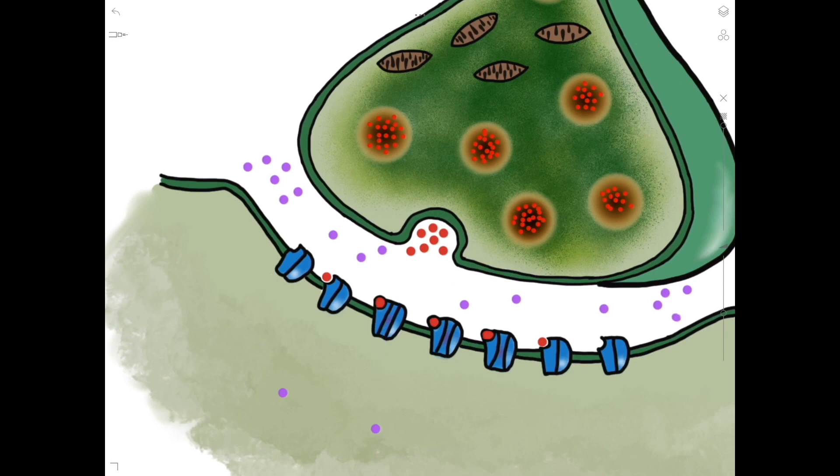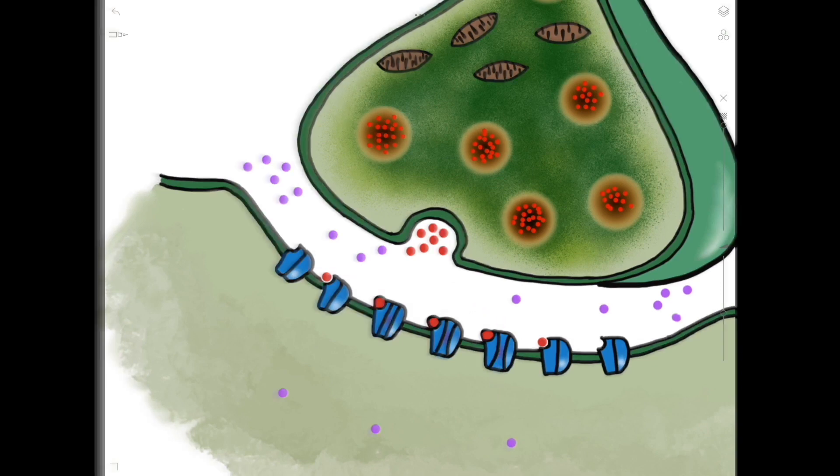the ion channels open and allow for the influx of ions from the synaptic cleft. This allows for the electrical transmission or action potential to be passed on to the next neuron.